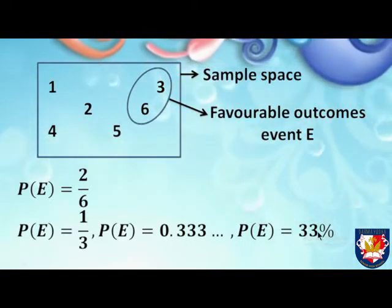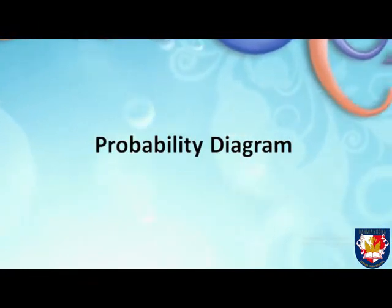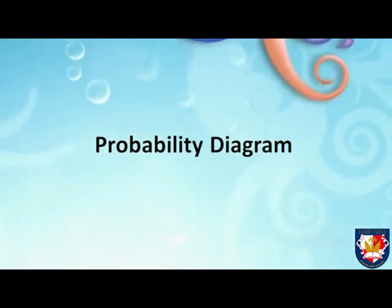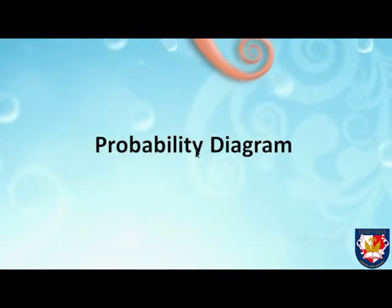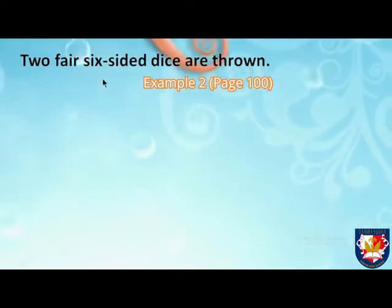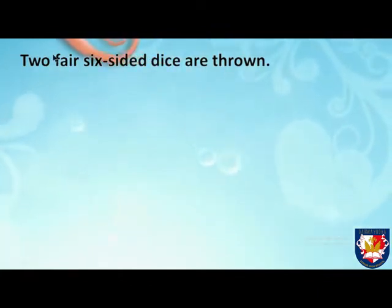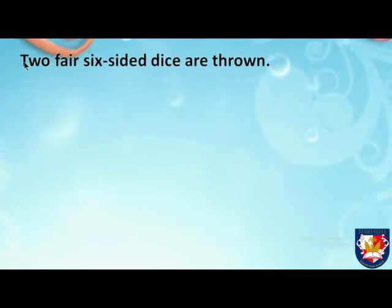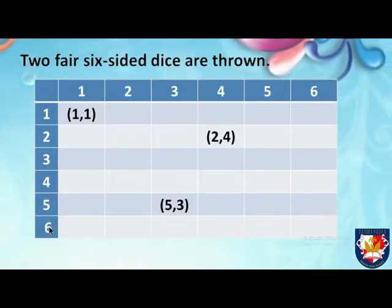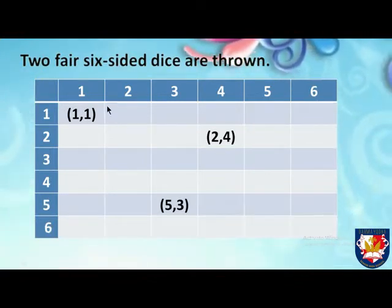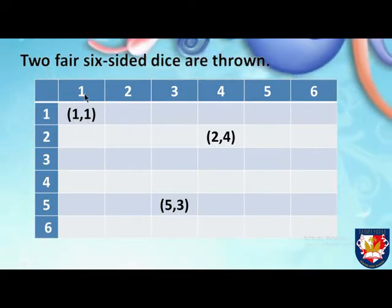How about the probability of an event that involves two processes? We need a probability diagram to list all the outcomes. For example, two fair six-sided dice are thrown. Since this involves two processes, we need a diagram. Let's say this is the first die and this is the second die. One and one means we got one on the first die and one on the second.